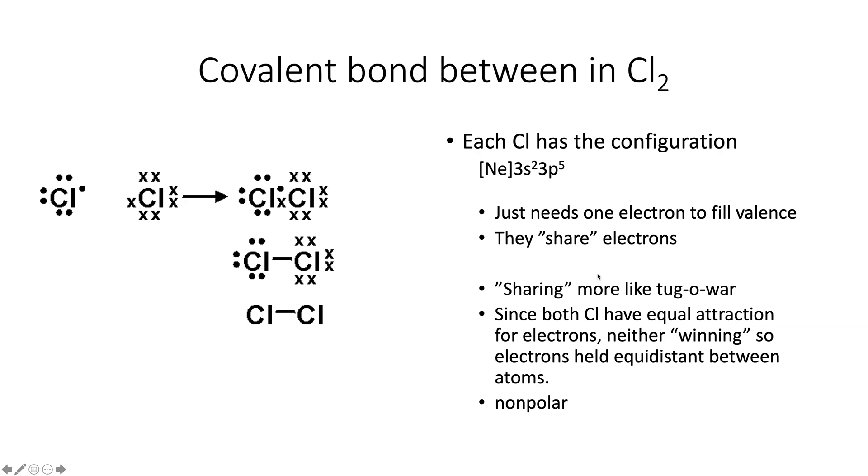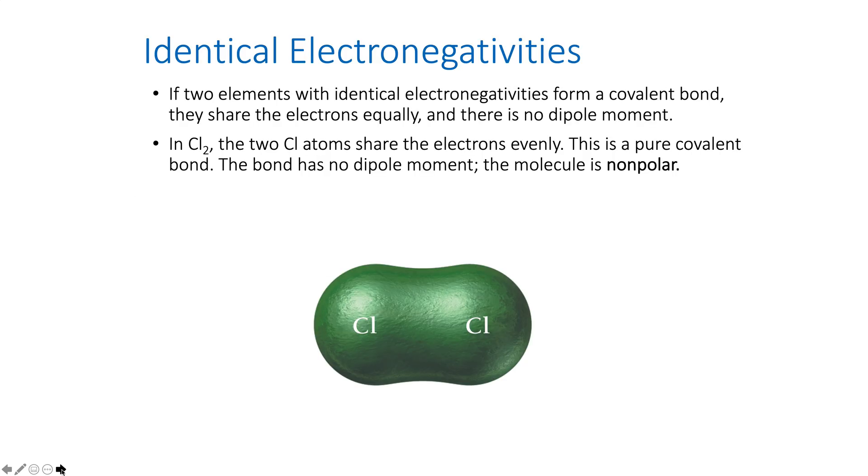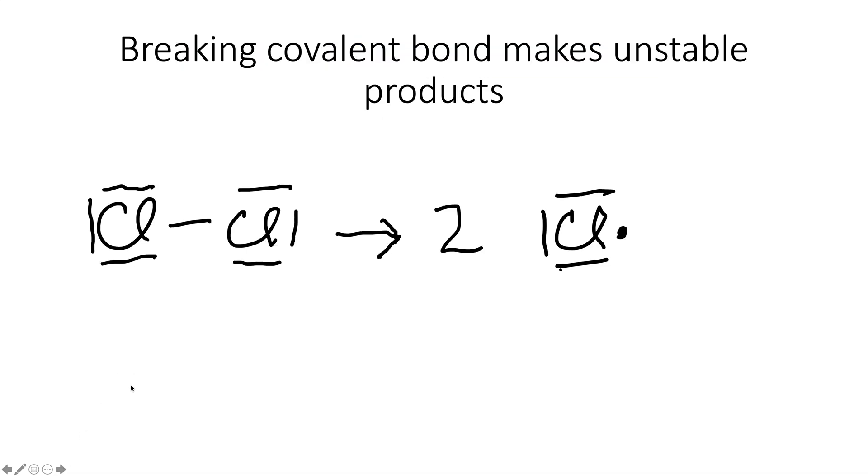Each chlorine just needs one electron to fill the valence. So they're sharing the electrons. It's more like a tug-of-war between opponents of equal skill. Which has a stronger attraction for electrons? Neither one. They're both chlorine. So that means that this pair of electrons is going to be held equidistant between the two chlorines. Therefore, there's no polarity. This is just a nicer picture of it. You can see that the chlorines will just share the electrons equally between them. So this would be the electron cloud.